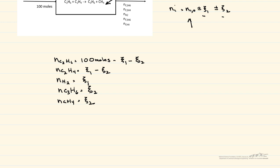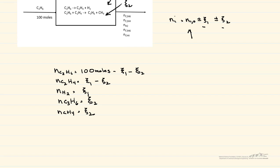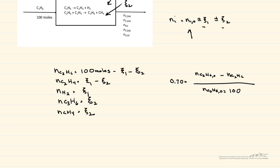The fractional conversion equation is: 0.7 = (n_ethane_in − n_ethane_out) / n_ethane_in = (100 − n_ethane_out) / 100. Solving this gives n_ethane_out = 30 moles. The selectivity equation gives: 5 = n_ethylene / n_propylene.